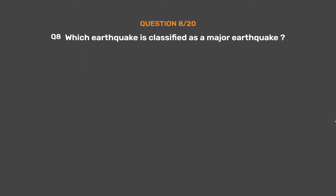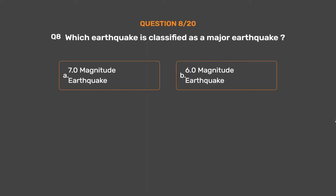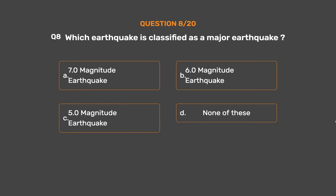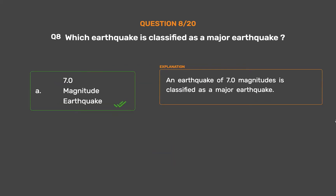Question No. 8: Which earthquake is classified as a major earthquake? Option A: 7.0 magnitude. Option B: 6.0 magnitude. Option C: 5.0 magnitude. Option D: None of these. The correct answer is Option A: 7.0 magnitude earthquake. An earthquake of 7.0 magnitude is classified as a major earthquake.